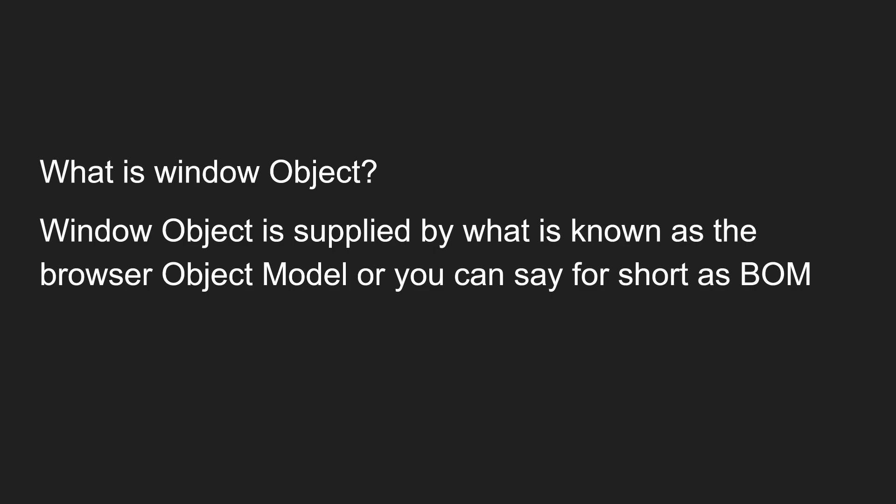The window object is the root element of the website. This window has access to the DOM — that is the document — and apart from the document, we also have navigator, history, location, and many other things available in the window object. The window object is supplied by what is known as the Browser Object Model, shortly called the BOM. This window object is provided by the BOM.